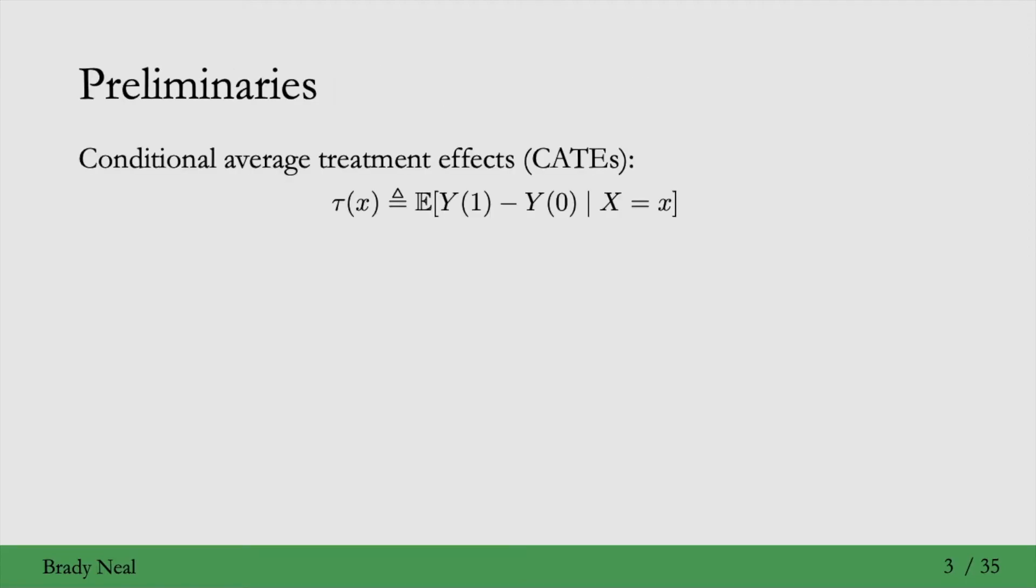We'll start with some preliminaries, the first of which is conditional average treatment effects. The conditional average treatment effect is just like the regular average treatment effect, but now we're conditioning on x here. And we denote this with tau of x, where this is the value of x that we're conditioning big X to be equal to. Throughout this lecture, we're always going to be assuming unconfoundedness and positivity, so we have identification.